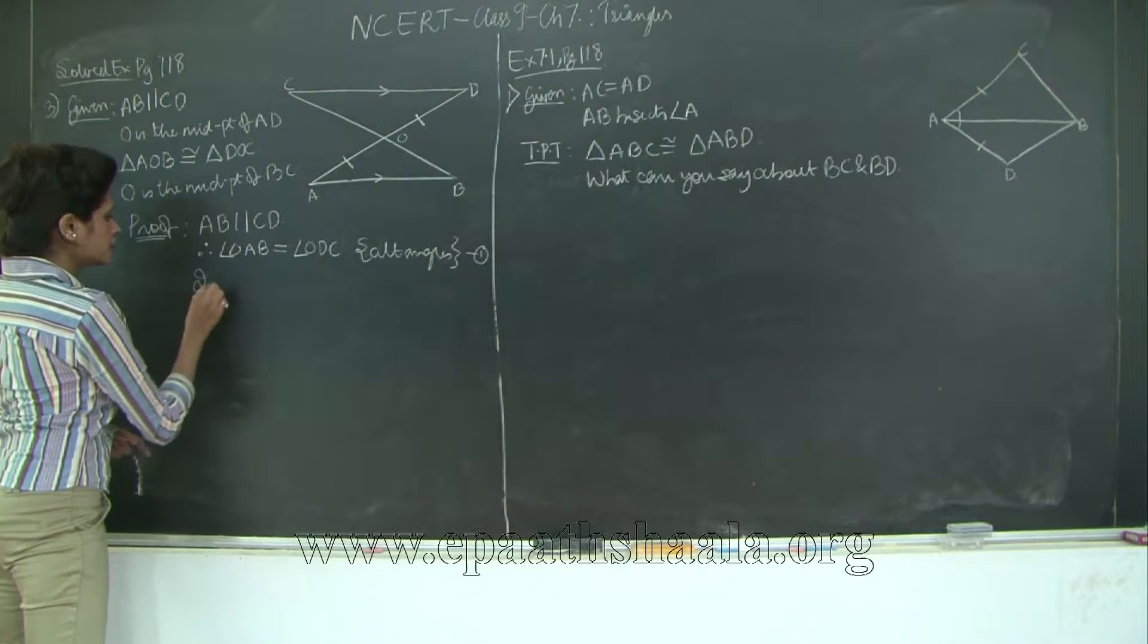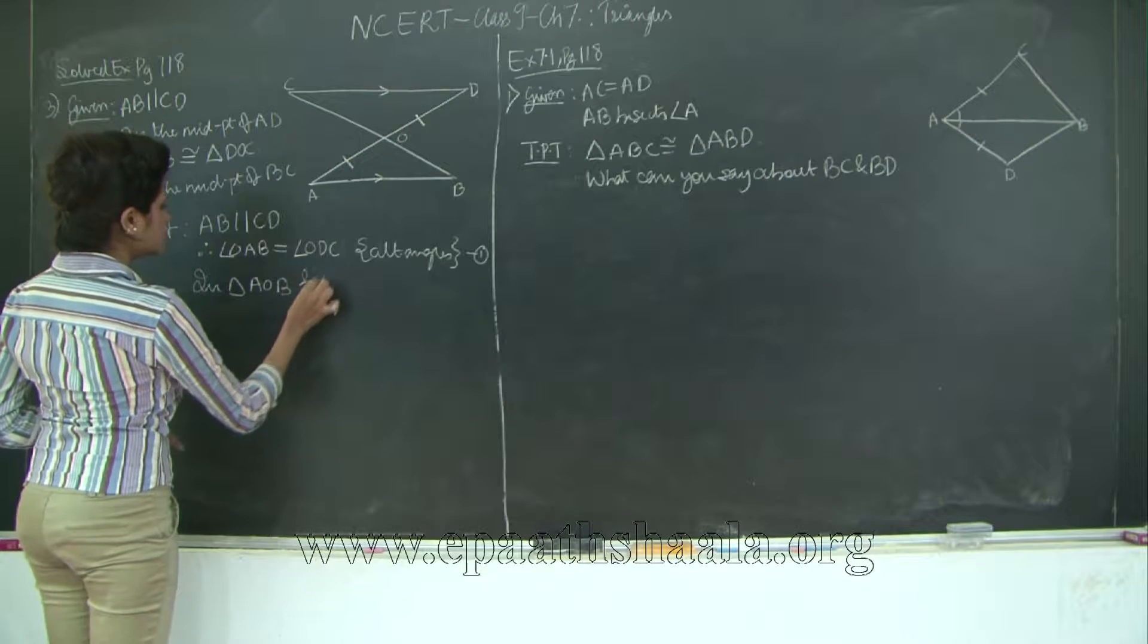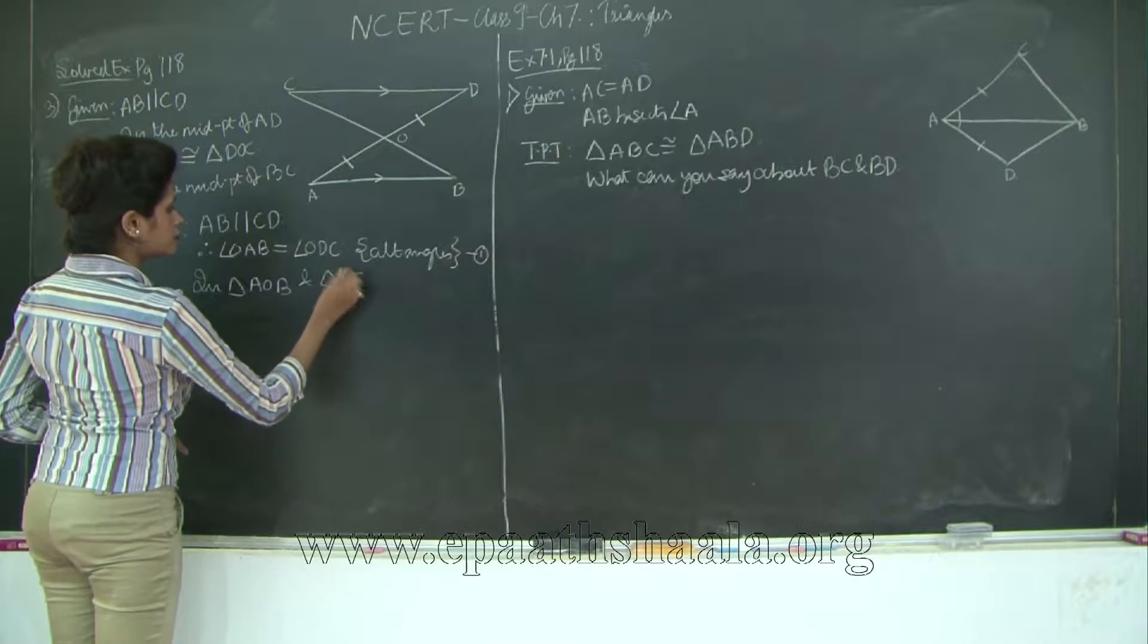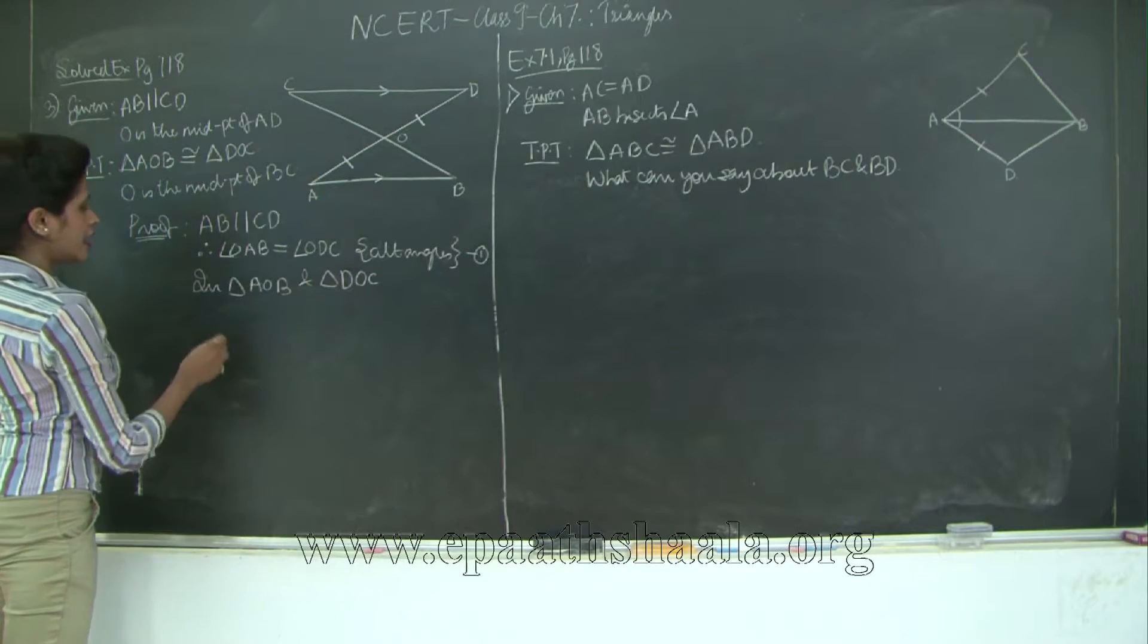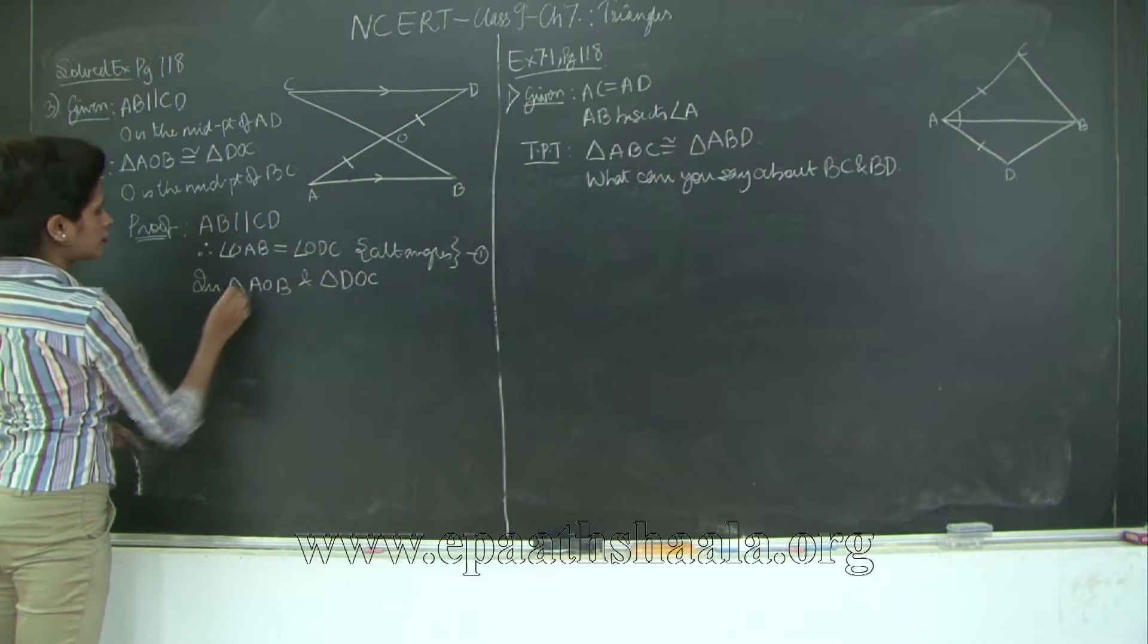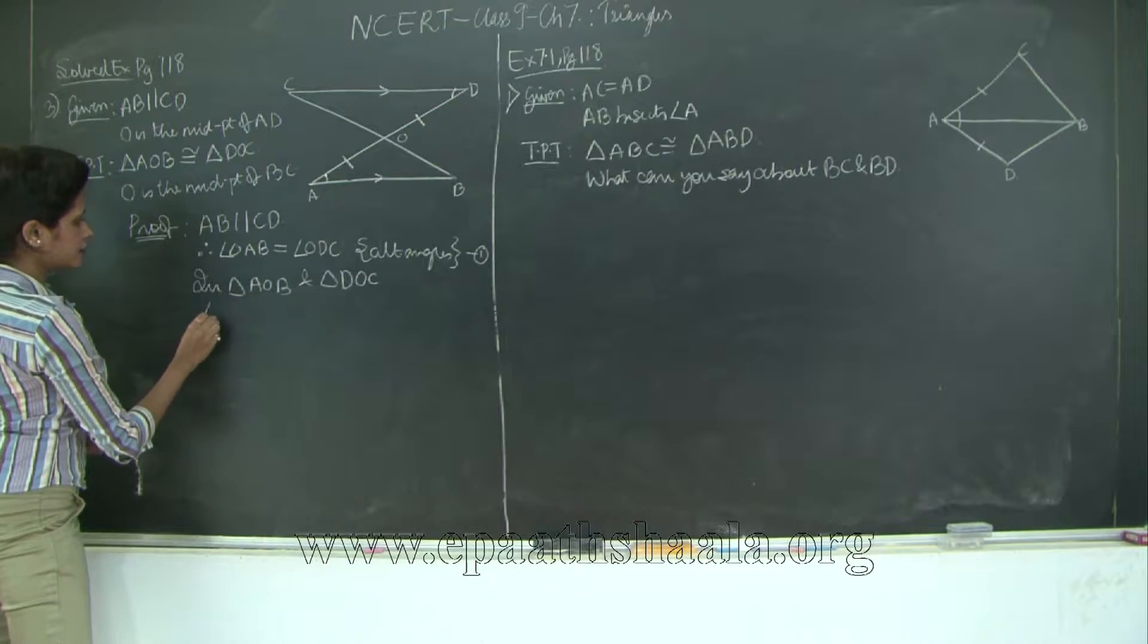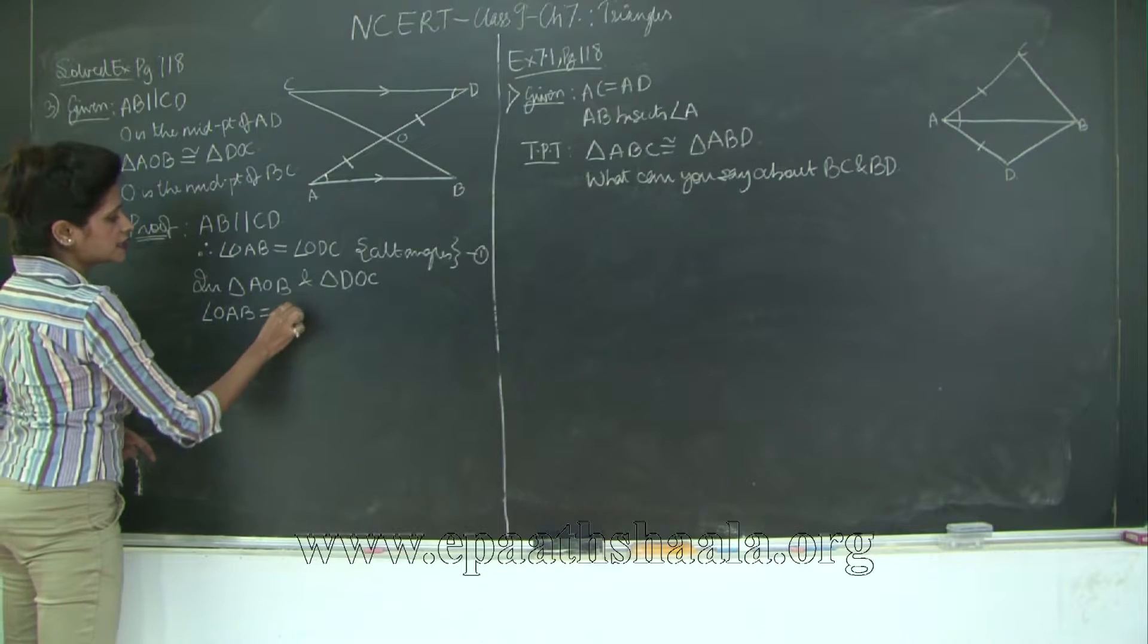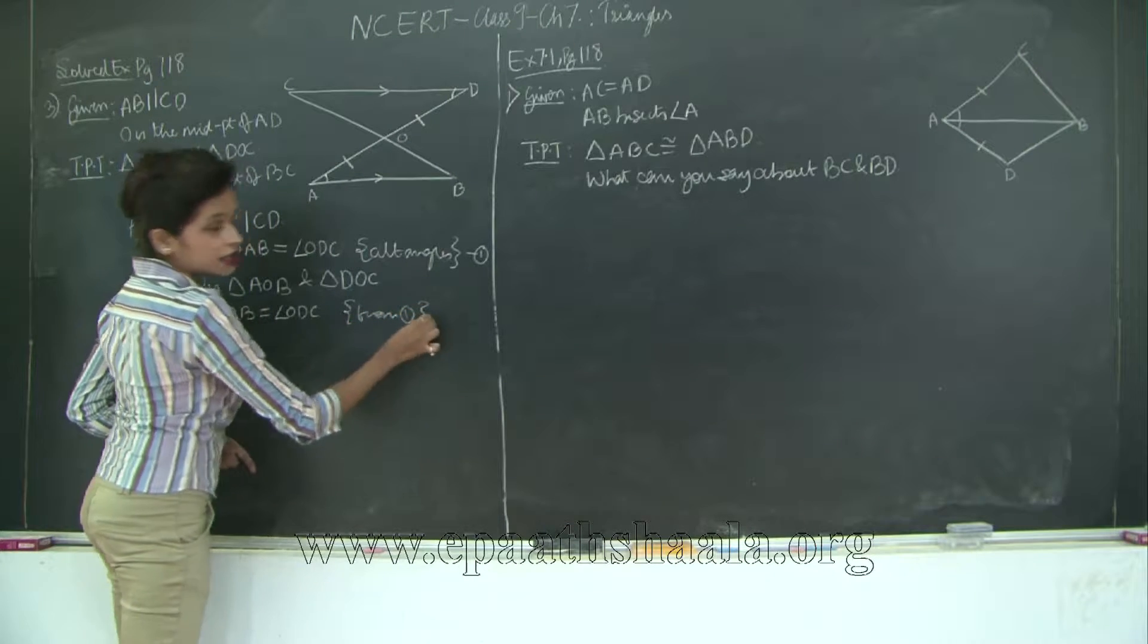Now in triangle AOB and triangle DOC, what do I have? Let's mark this what we have proved. I have angle OAB is equal to angle ODC from 1, correct?